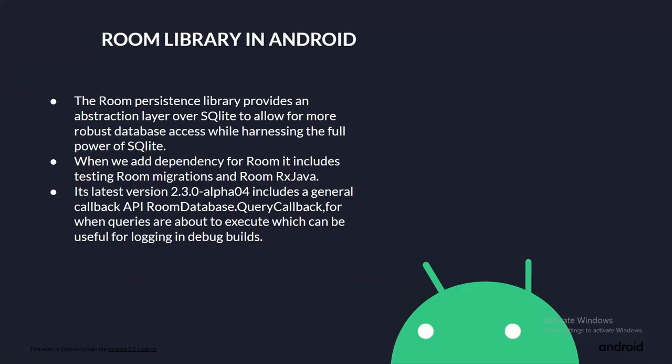The next step is to create a DAO class. DAOs are responsible for defining the methods that access the database. In the initial SQLite implementation of your project, all queries to the database were done in a local data source file where we were working with cursor objects. With Room, we don't need all the cursor-related code and can simply define our queries using annotations in the DAO class. The next step is to create the database. We need to define an abstract class that extends RoomDatabase. This class is annotated with @Database, lists the entities contained in the database, and the DAOs which access them.